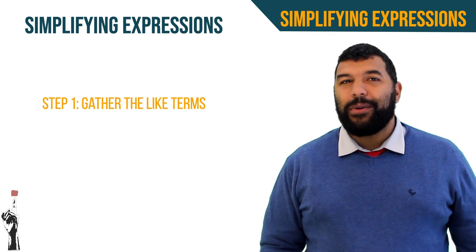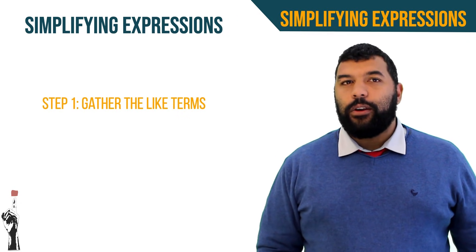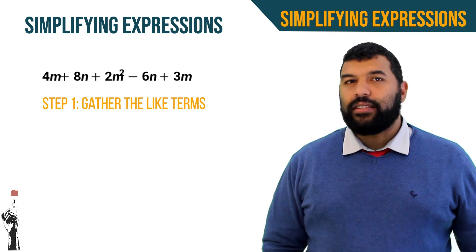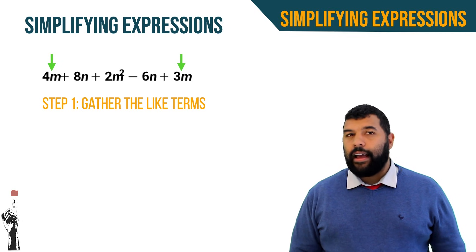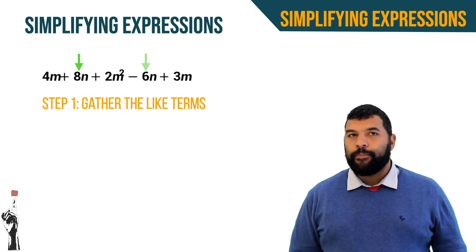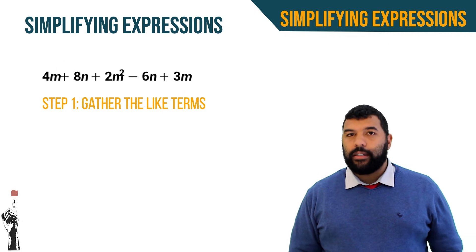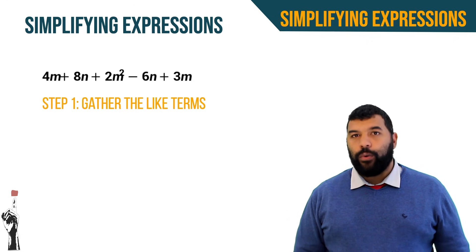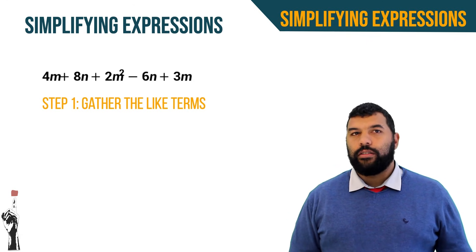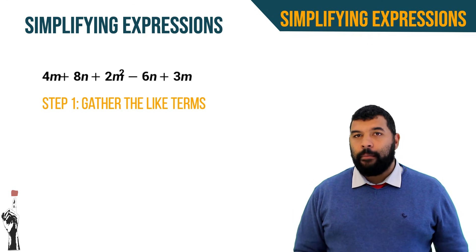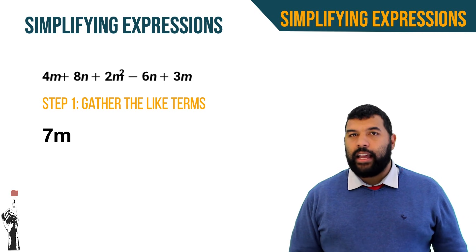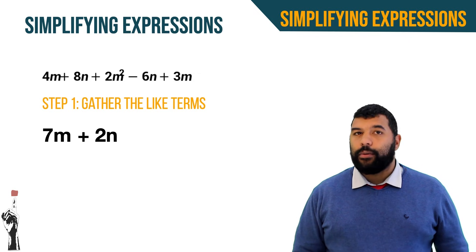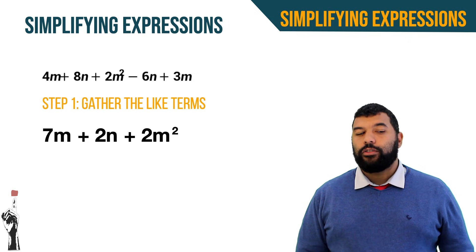Step one: gather the like terms. Looking at this expression, we see like terms 4m and 3m, and also 8n and negative 6n. Remember, we consider the sign with the coefficient. Gathering 4m and 3m gives 7m. Gathering 8n and negative 6n gives positive 2n. And we're left with plus 2m squared.